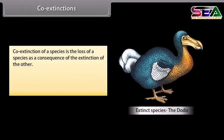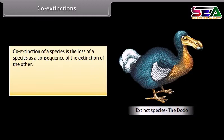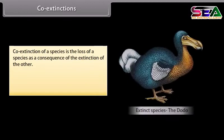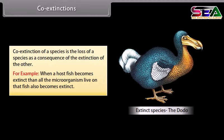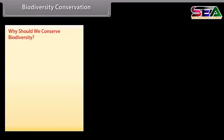Co-extinctions. Co-extinction of a species is the loss of a species as a consequence of the extinction of another species.